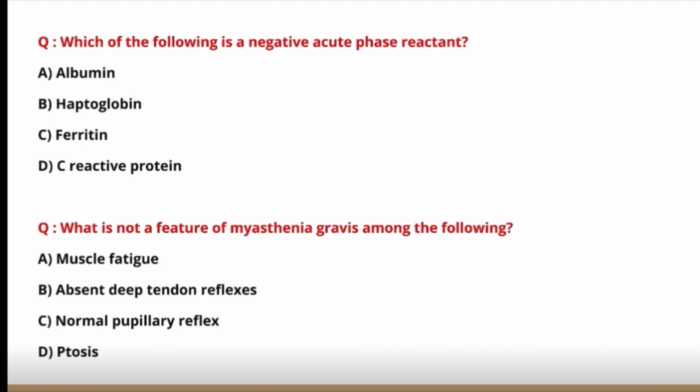Next question: which is a negative acute phase reactant — albumin, haptoglobin, ferritin, or CRP? Negative acute phase reactant means the parameter falls during infection. CRP, ferritin, and haptoglobin are generally increased during infection — they are positive acute phase reactants. Albumin falls during infection — it is a negative acute phase reactant. The correct answer is albumin.